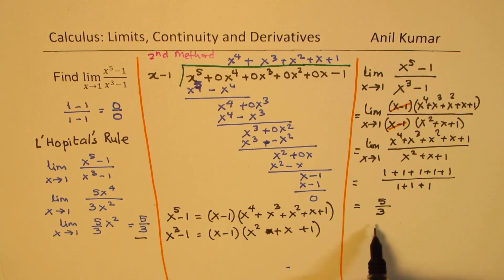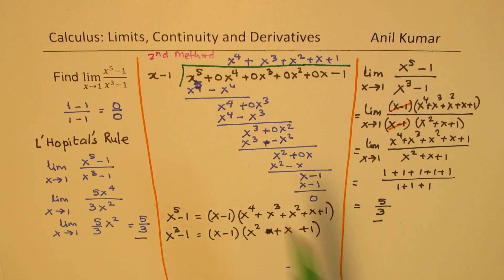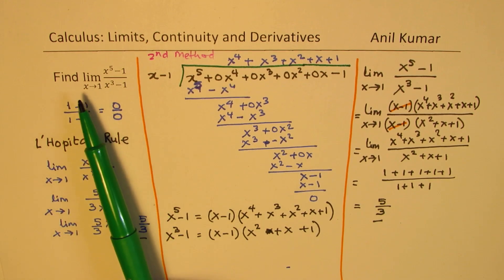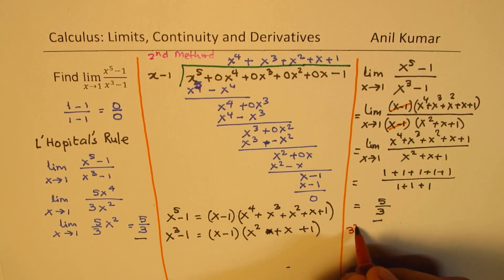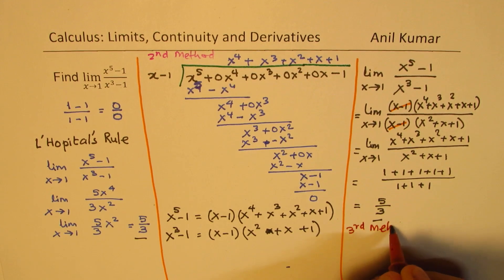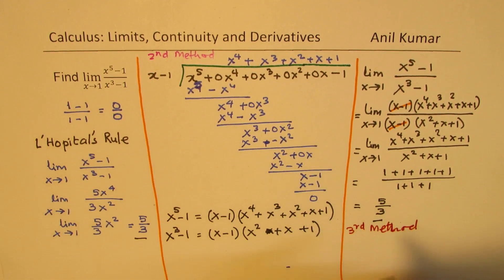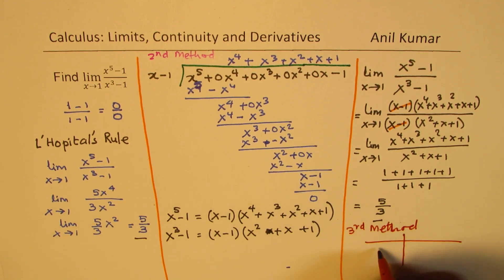So the limit is indeed 5 over 3, and that is how we could solve this question. Now in one of our videos, we have done this using a table of values. That could be our third method, where we make a table of values and approach 1.